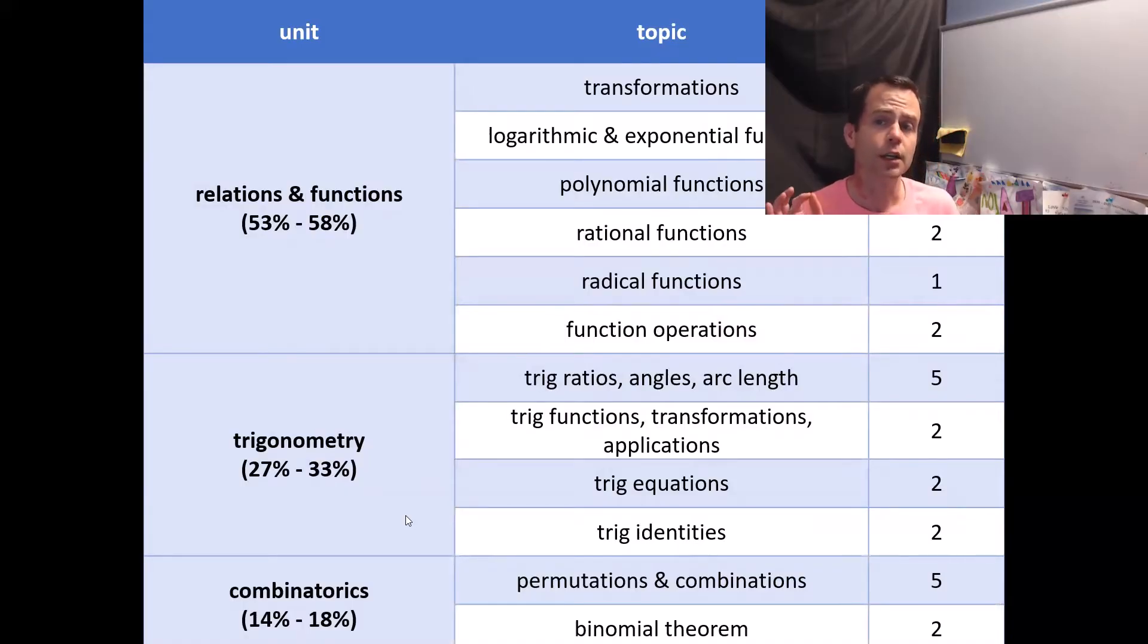You've got transformations, you've got logarithmic and exponential equations, polynomial functions, rational functions, radical functions, and function operations. If you think about how long you spent in 30-1 doing all of those topics, you probably spent just a little over half your year doing all of that. So that kind of makes sense. I think the slightly scarier number is this trig. It's almost about a third trig.